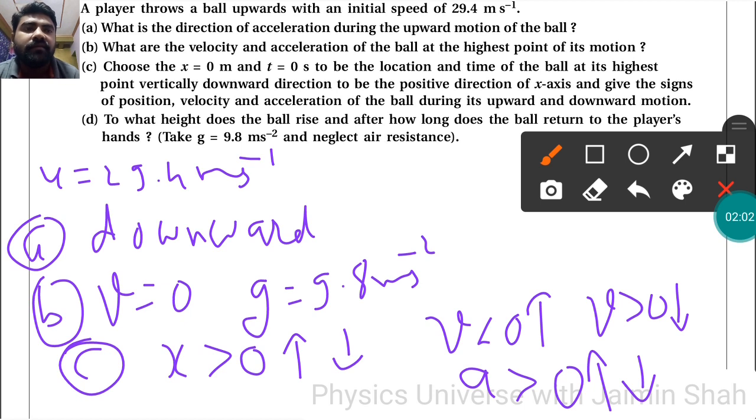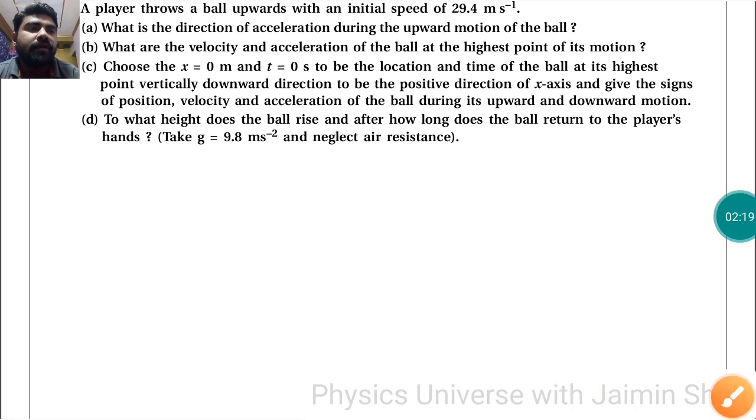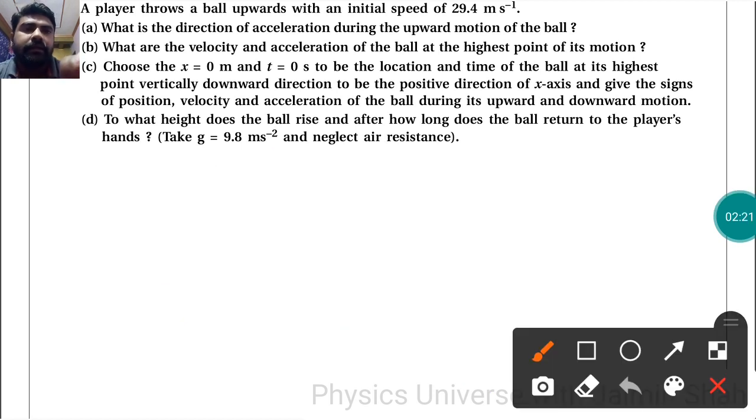And the last one: to what height does the ball rise and after how long does the ball return to the player's hands? Okay, so here we are having two different data: first data is u = 29.4 and second is g. Now we know that at maximum height any velocity is zero.